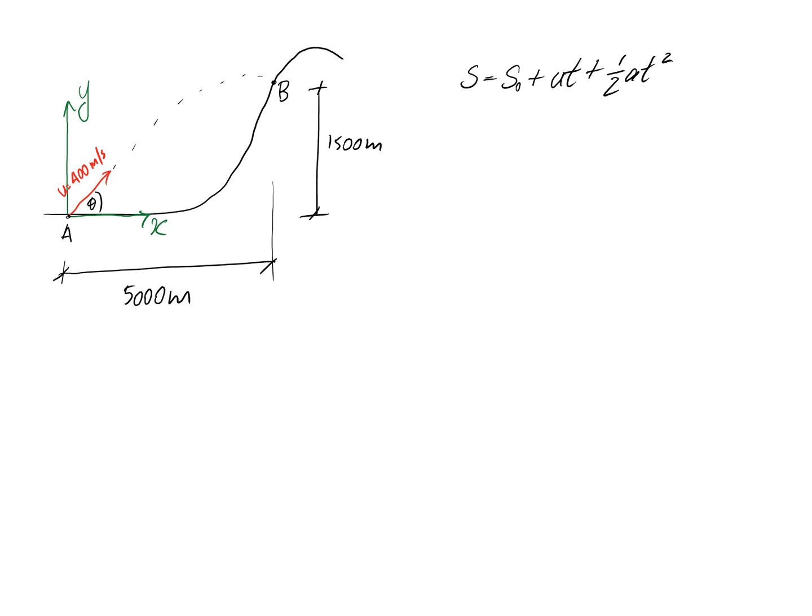The first thing I'm going to do is convert my initial velocity into an X and a Y component. So let me just draw that out. We know it's 400. This will be the X component, this will be the Y component.